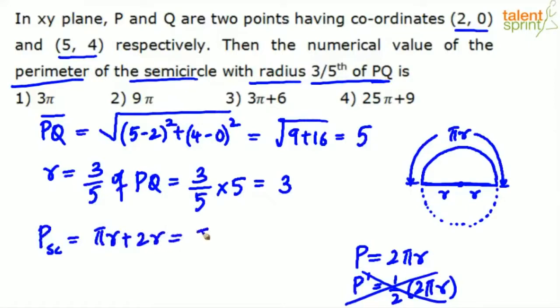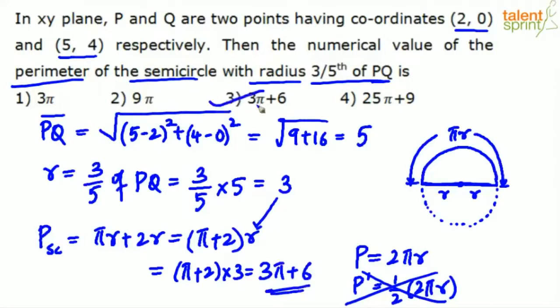If you remember it as (π+2) times r, well and good. Now substitute. What is the value of r? r is equal to 3. Substitute here. What do we get? (π+2) into 3. So this comes out to be 3π plus 6, option 3.